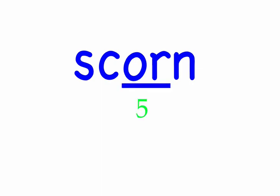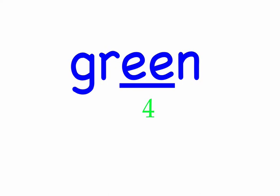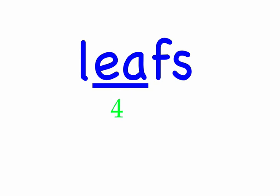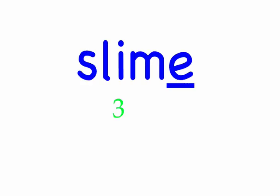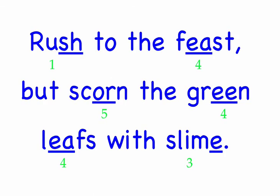The green. Green — four sounds: G, R, E, N. Green. Leaves — four sounds: L, E, F, S. Leaves. With slime. Slime — four sounds: S, L, I, M. Slime. Rush to the feast, but scorn the green leaves with slime.